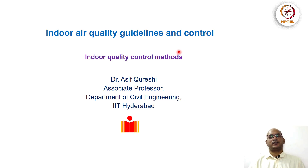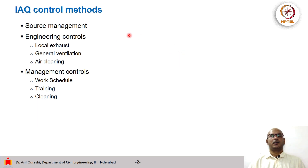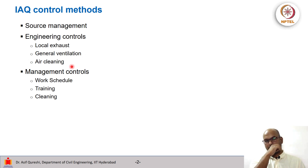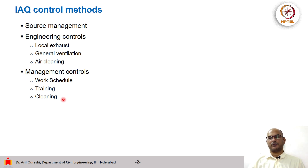Hello, in this lecture we will look at some air quality control methods. Broadly we can divide these methods into some bins: source management, engineering controls which could be local exhaust, general ventilation or air cleaning, or management controls, for example work schedule management, training and cleaning of workforce.